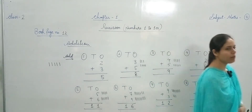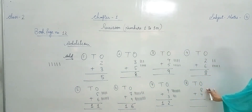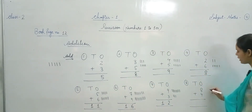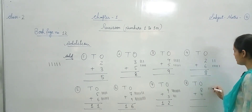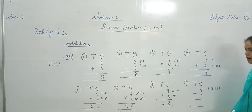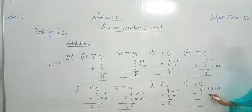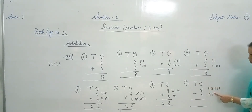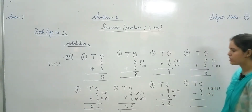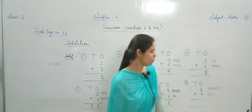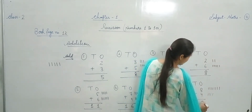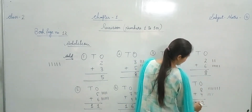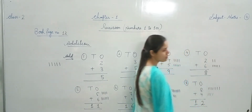Last question देखते हैं — 8 plus 4. पहले lines draw करते हैं — 8 lines, फिर 4 more lines. Count कीजिए — 1, 2, 3, 4, 5, 6, 7, 8, 9, 10, 11, 12. 12 में 2 digits हैं — आप 2 लिखेंगे Ones column में, 1 लिखेंगे Tens column में. This is your answer.